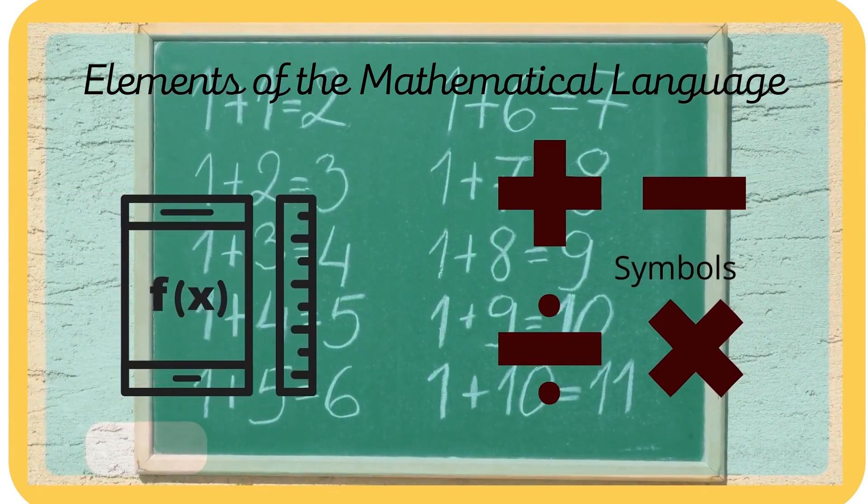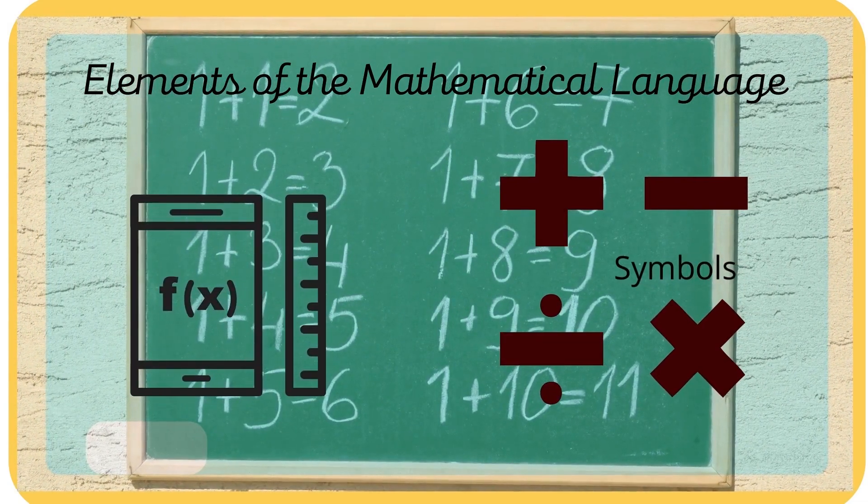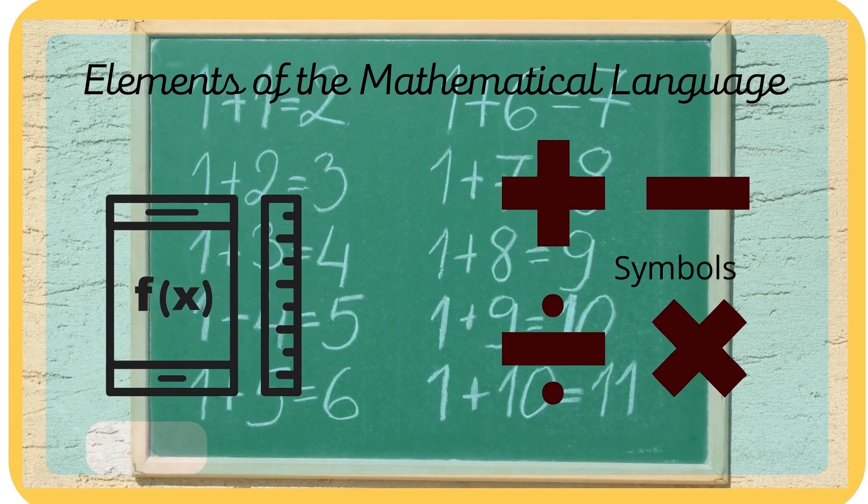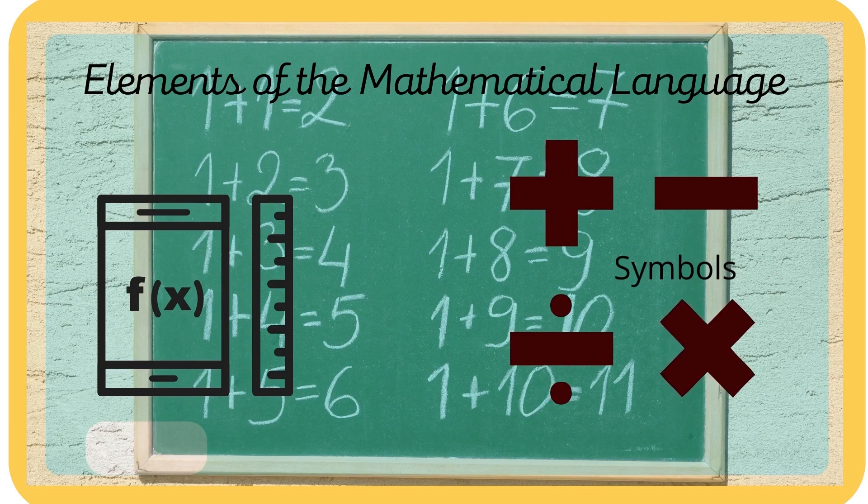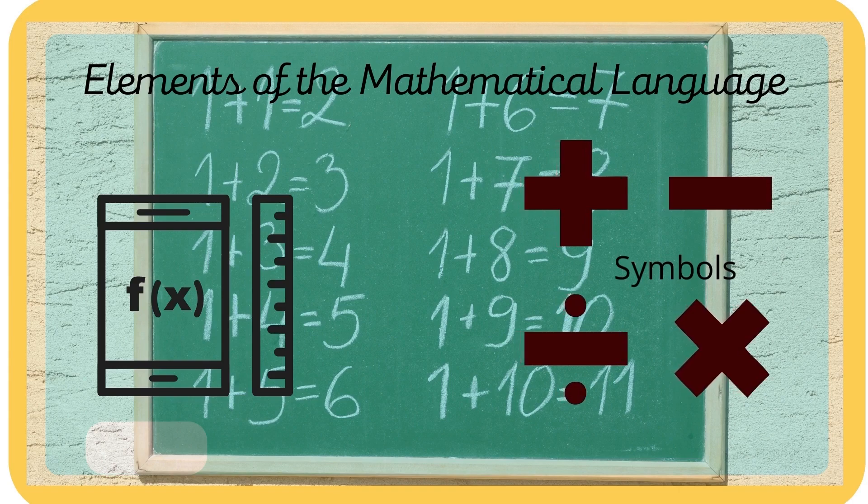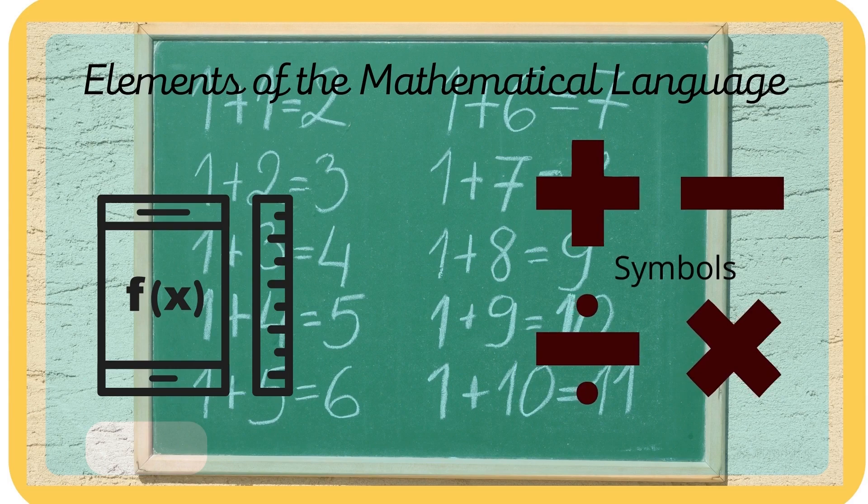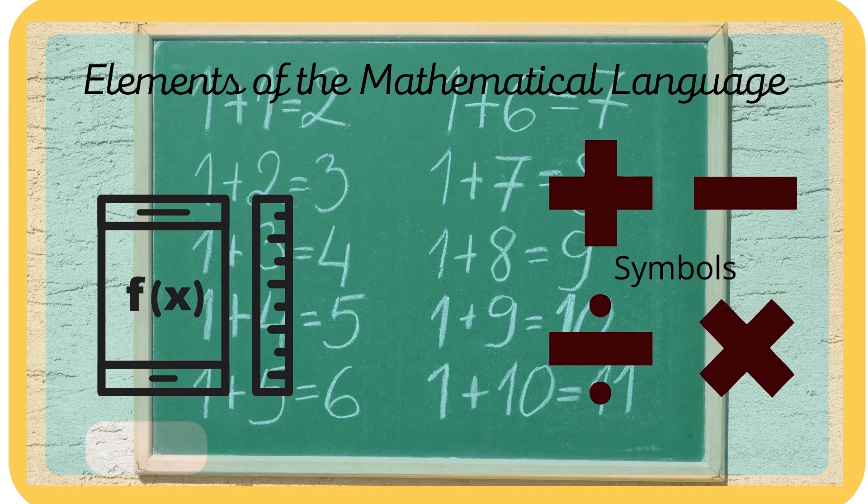Now let's go to the elements of mathematical language. Like other languages, mathematics has nouns, pronouns, verbs, and sentences. It has its own vocabulary, grammar, syntax, synonyms, negations, sentence structure, paragraph structure, conventions, and abbreviations.